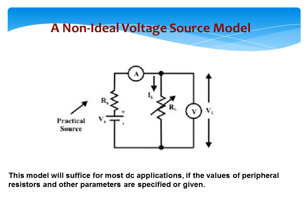Here's a simple non-ideal voltage source model. We have a practical source where the battery is considered to be ideal, but we have injected or included a source resistance. This model suffices for most DC applications if the values of peripheral resistors and other parameters are specified or given.